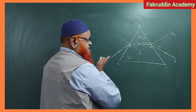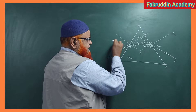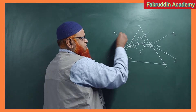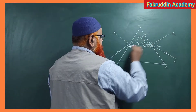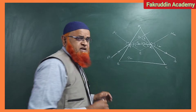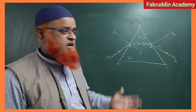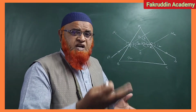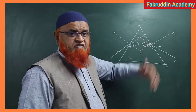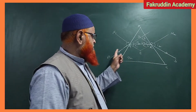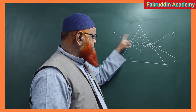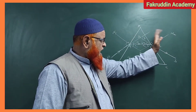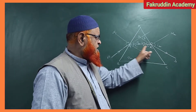A line PQ enters from rarer to denser, so it bends towards the normal. This is going to be normal N1 and N2. When a light ray enters from rarer to denser it bends towards the normal, and if it enters from denser to rarer it bends away from the normal. So here it is bending towards the normal, and when it comes outside it bends away from the normal.